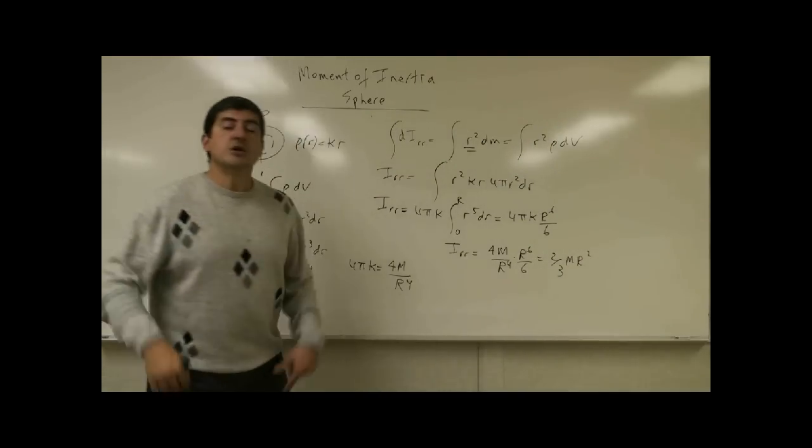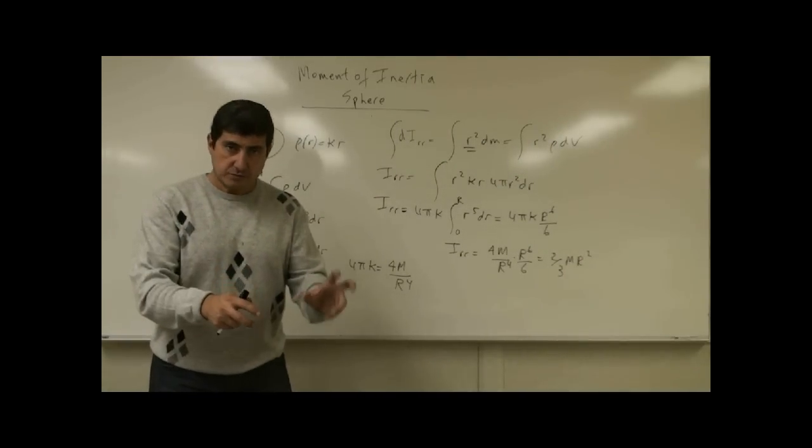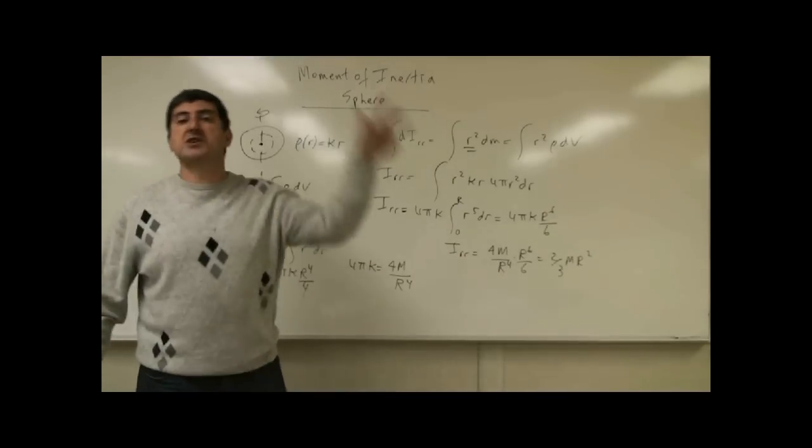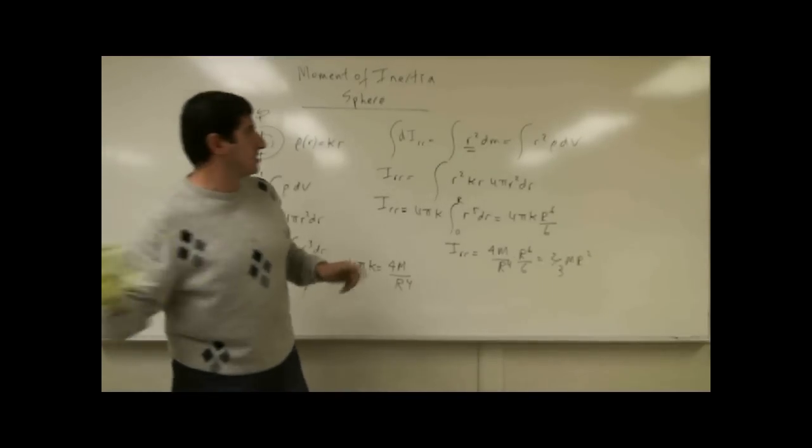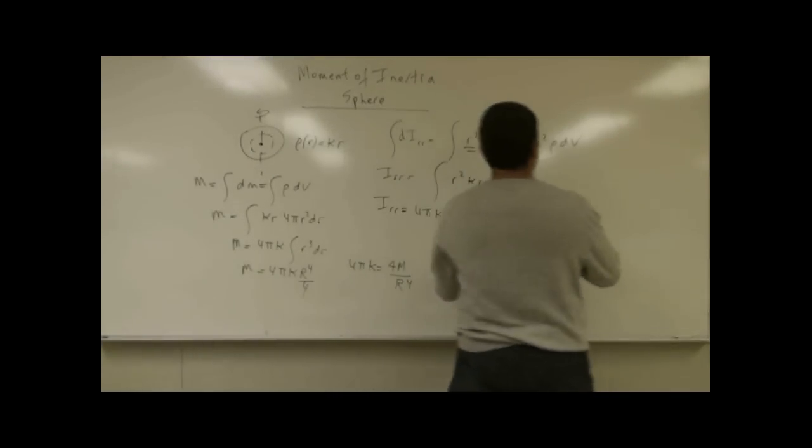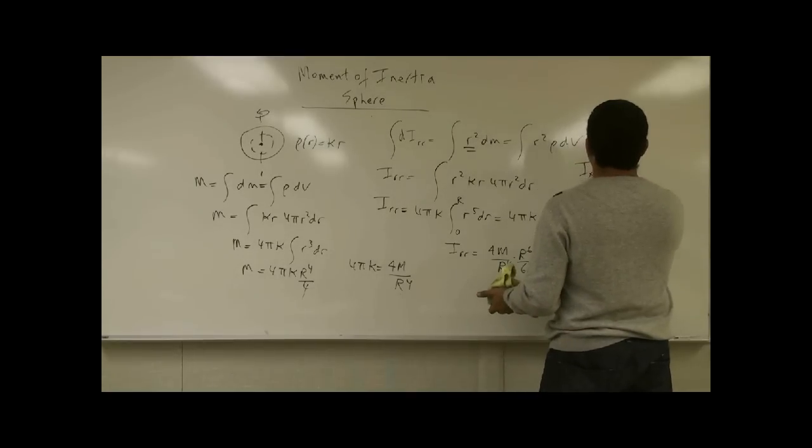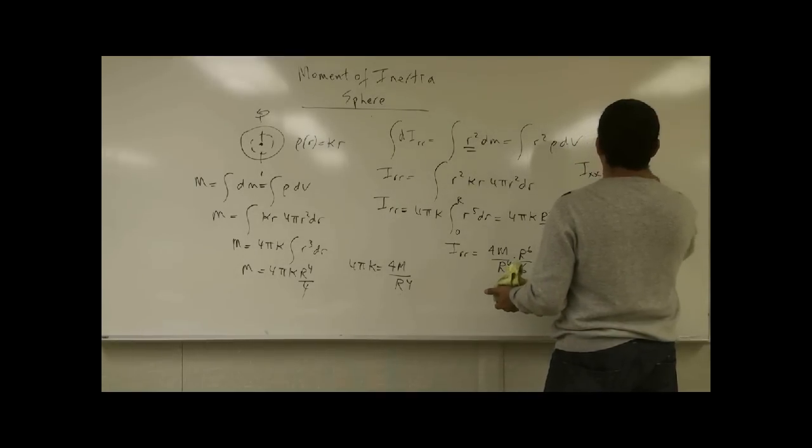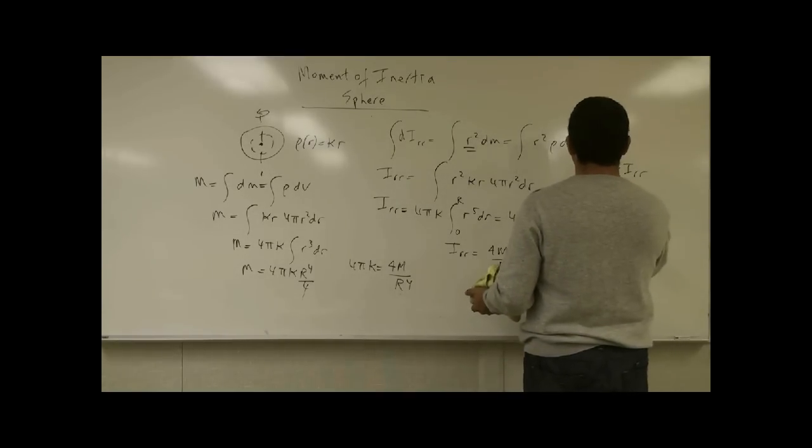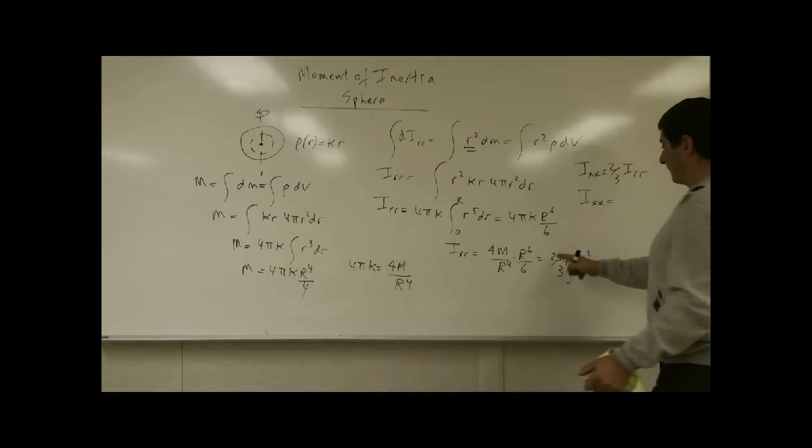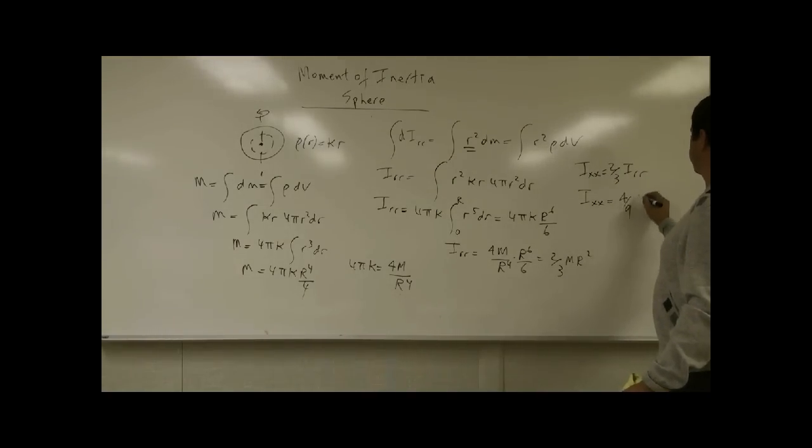Then what do you do? You use that theorem that says I_xx is always 2 thirds of whatever the I_rr is. So what's I_xx going to equal? 2 thirds of I_rr which is going to be 2 thirds of 2 thirds which is 4 ninths mr squared.